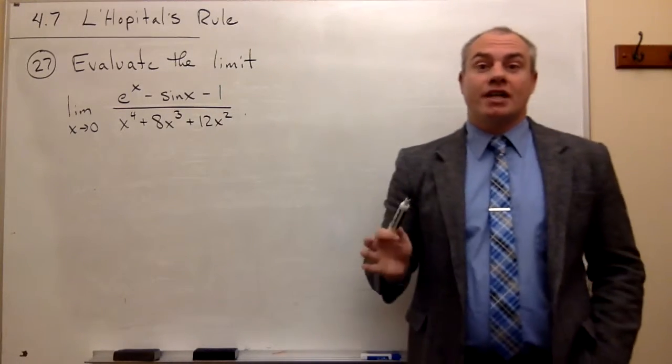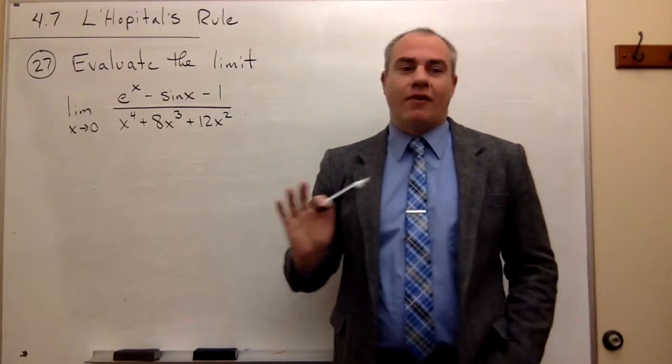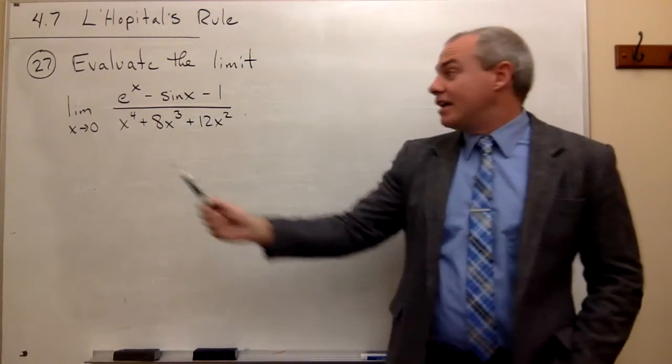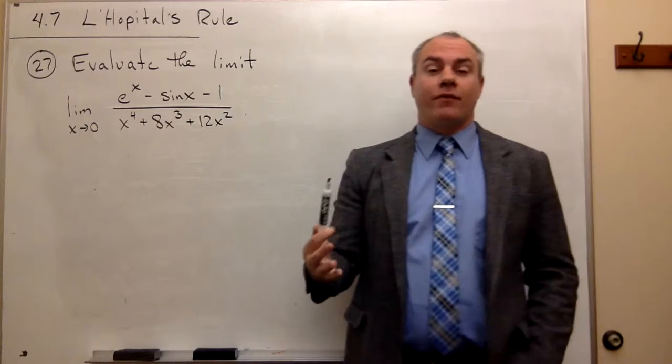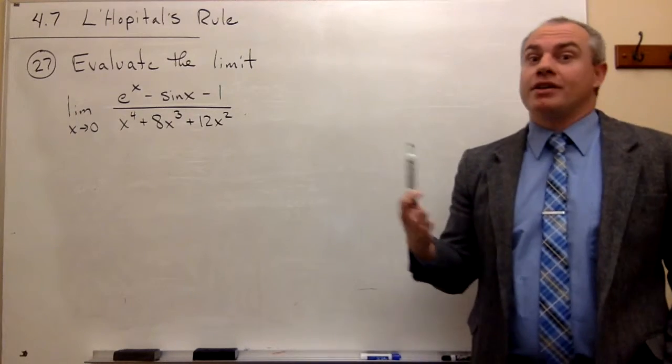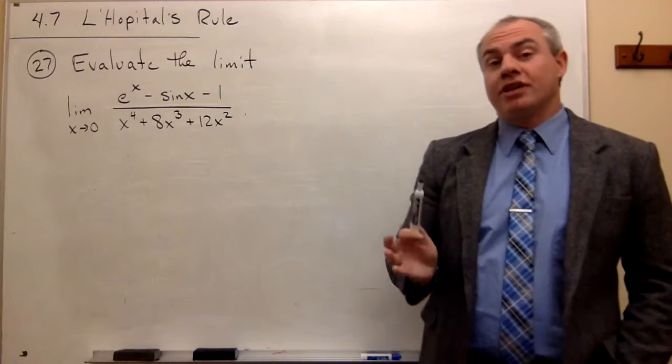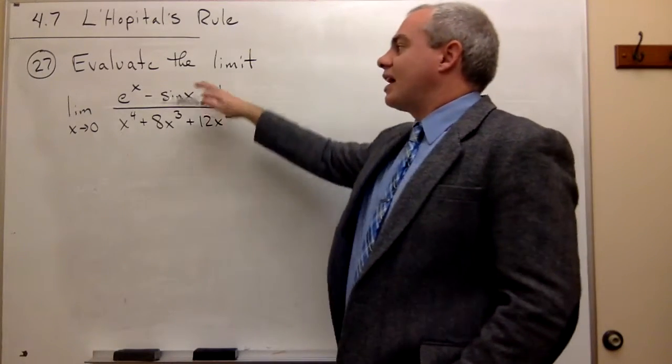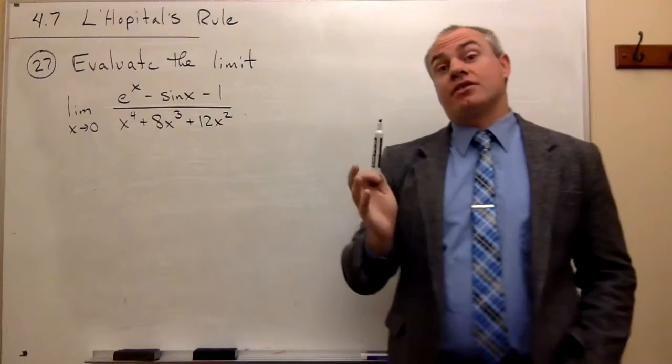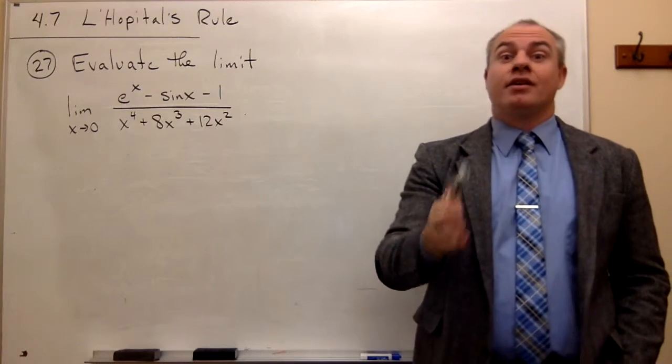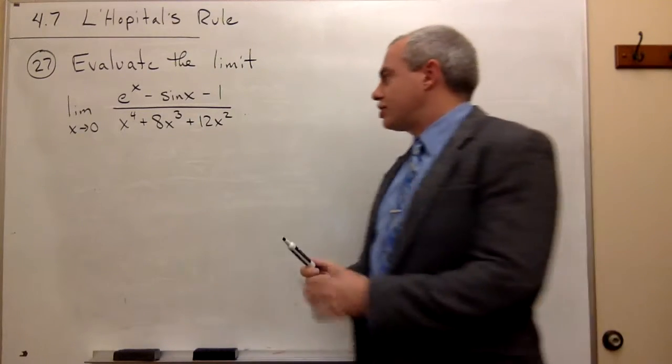So the very first thing I need to do when evaluating a limit like this is determine what kind of form I have if I plug in 0. Is it an indeterminate form? And if it is, is it one of the indeterminate forms that I can use L'Hôpital's rule on? In other words, I'm really trying to figure out: is this thing looking like 0/0 or ∞/∞? If the answer is yes, great, use L'Hôpital's rule. If the answer is no, then we can't. So let's check it out.